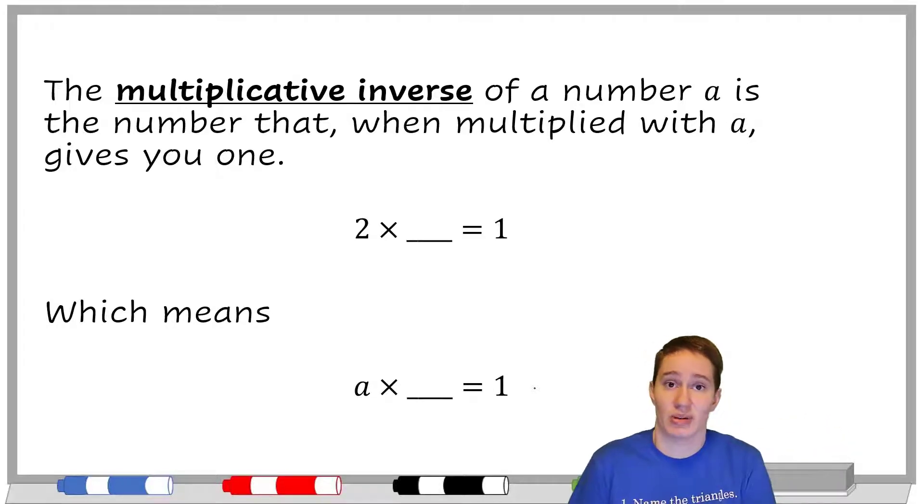For instance, if I do two times something equals one, that always works. So you might be thinking, I don't know the answer to that. Or maybe you're thinking, I know exactly what the answer is. Or maybe you're thinking, if only this was a division problem, I'd know the answer. Any of those three things we can work with. So two times one half gives us one. So I'm going to fill in one half to this blank right here. Because think about it like two over one times one half, the twos cancel, you end up with one times one over one times one, which is one.